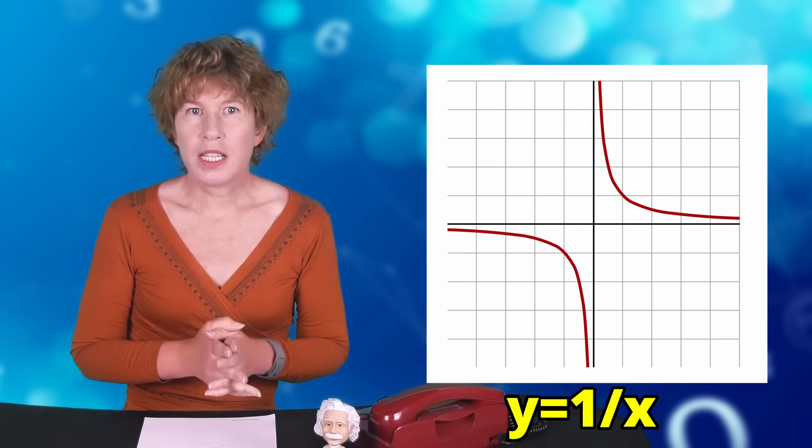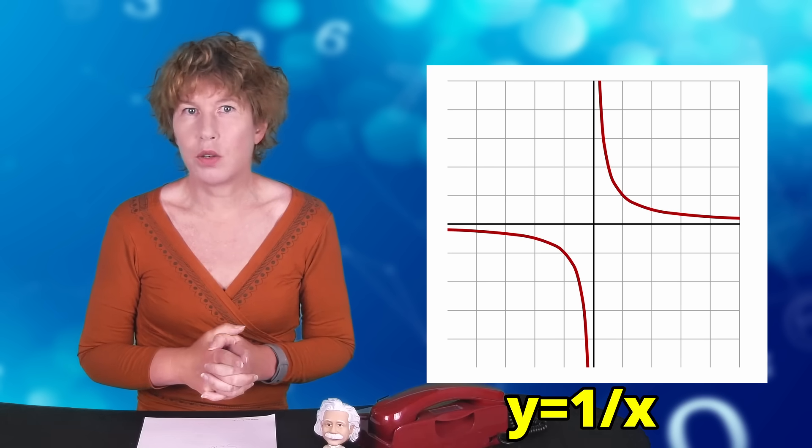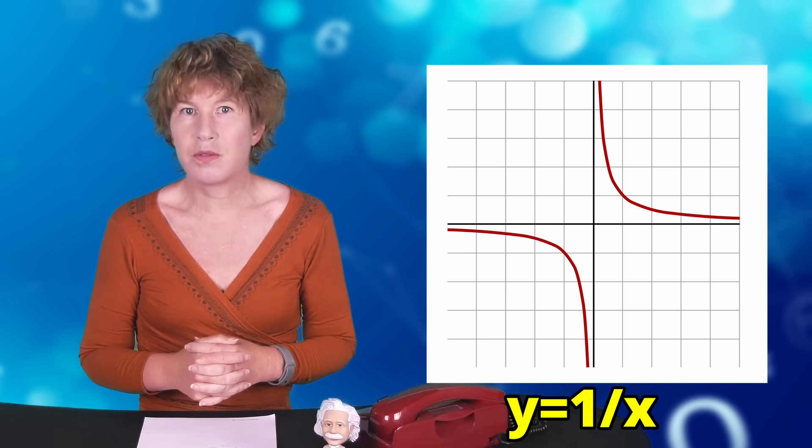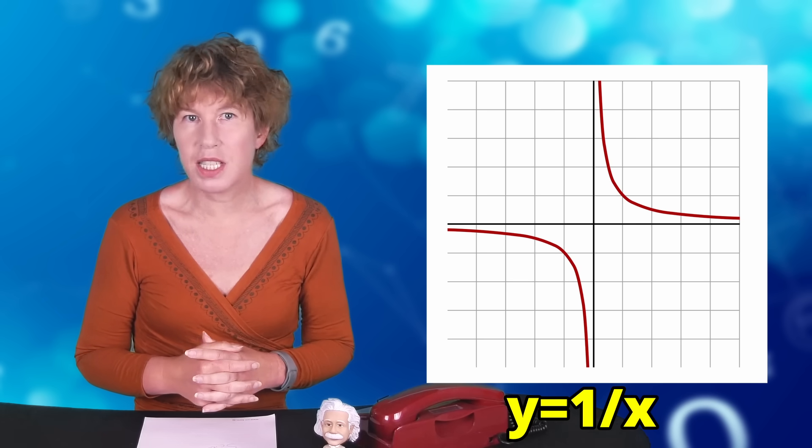The surface obtained by rotating the curve 1 over x for x larger than 1 about the x-axis has finite volume but infinite surface area. In other words, you could fill it with paint but could never coat its surface.